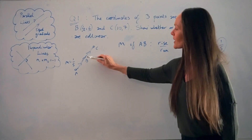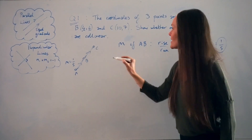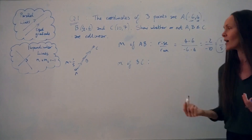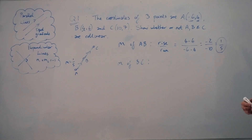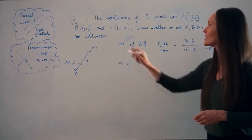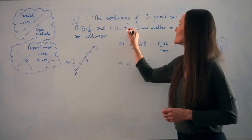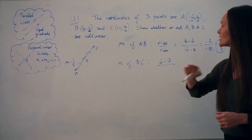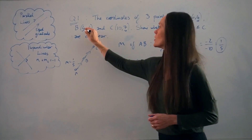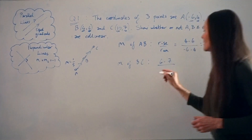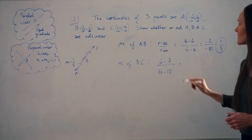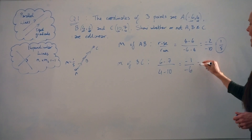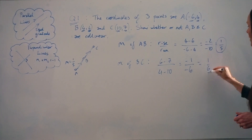Now we need to work out the gradient of line BC — M of BC. Again using rise over run, I'm going to subtract the Y values of B and C: 6 take away 7. Then divide by the difference in X values: 4 take away 10. That gives negative 1 over negative 6, which simplifies to 1 sixth.